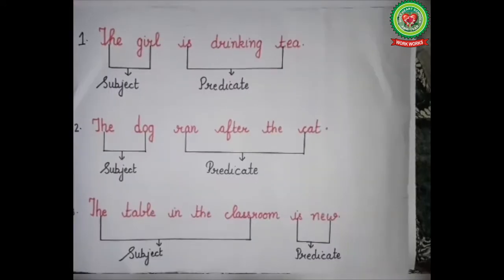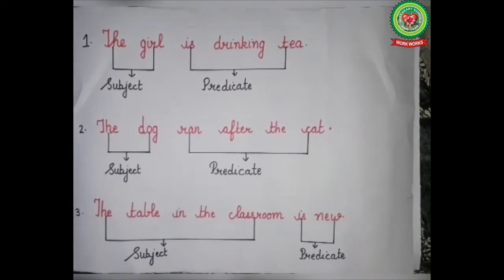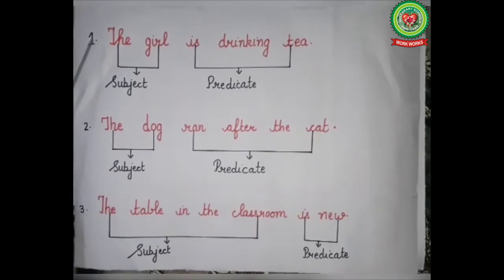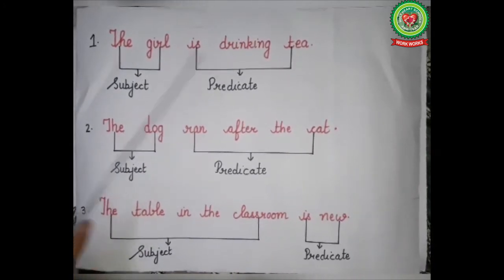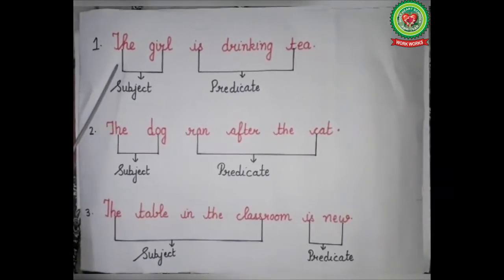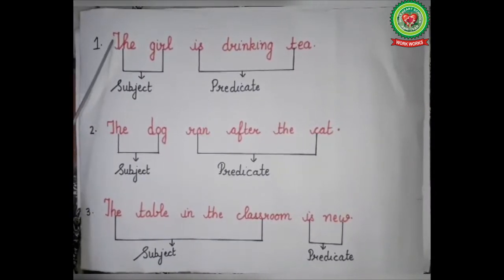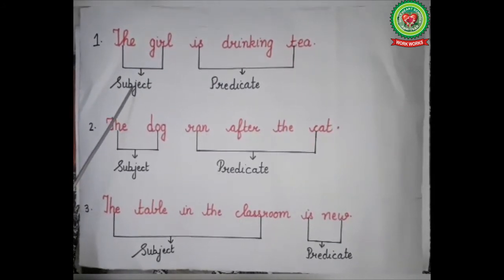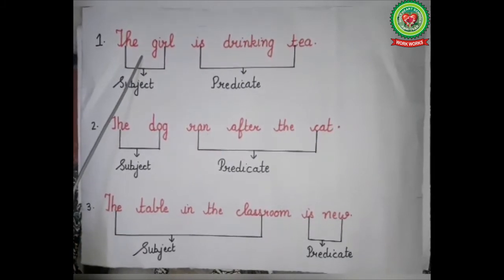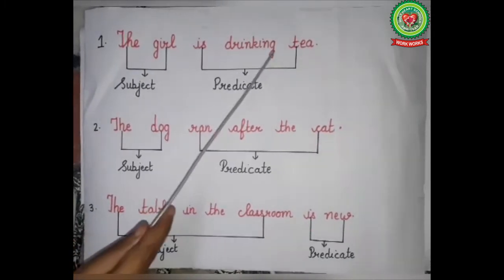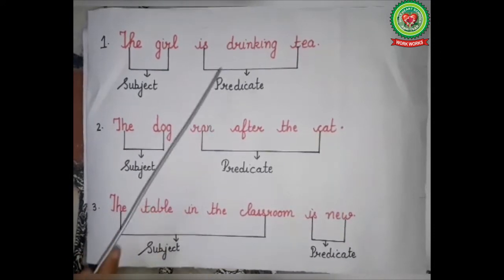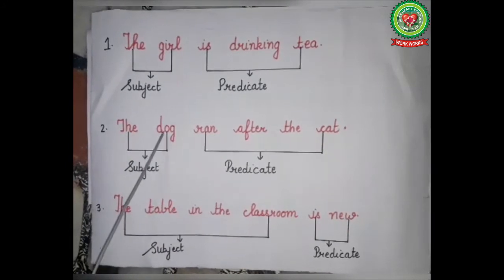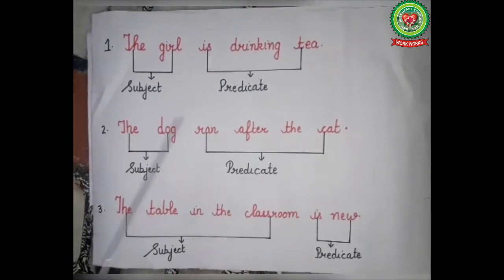Now I will explain the meaning of subject and predicate by taking some examples. Number one: 'The girl is drinking tea.' About whom we are talking in the sentence? The answer is 'the girl,' so 'the girl' is the subject of the sentence. What we are talking about the girl? The answer is 'is drinking tea,' so 'is drinking tea' is the predicate of the sentence.